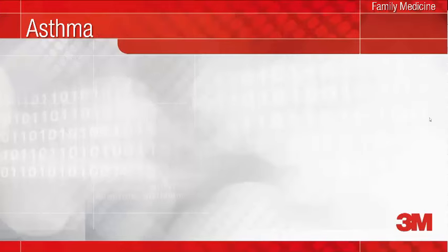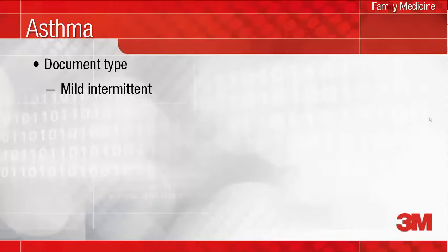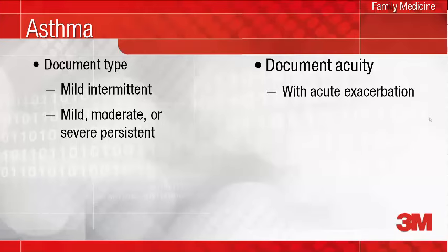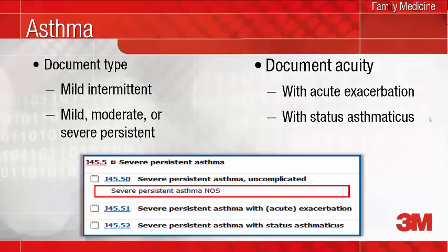The classification of asthma is an example of the use of updated terminology in ICD-10. Asthma is now classified as mild intermittent, or mild, moderate, or severe persistent. Documentation of acuity remains unchanged from ICD-9. You should continue to document the presence of an acute exacerbation or status asthmaticus. For example, a diagnosis of severe persistent asthma with acute exacerbation is classified to J45.51.